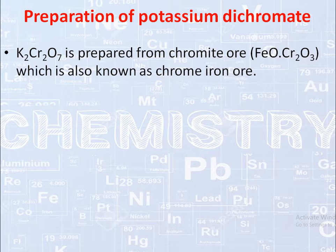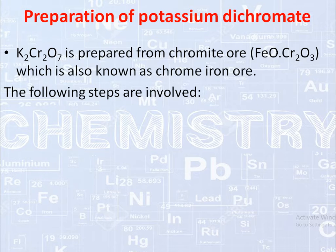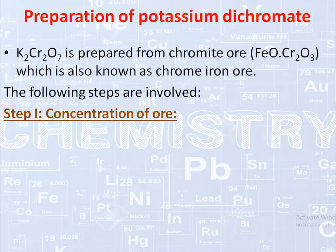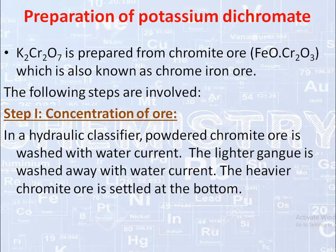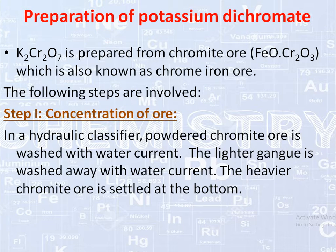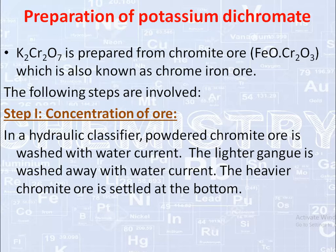The conversion of chromite ore into potassium dichromate involves four steps. Step 1 is the concentration of ore. In this step, chromite ore is concentrated using a current of water in a hydraulic classifier — a machine in which powdered chromite ore is washed with a water current. The lighter gangue is washed away, while the heavier, useful chromite ore is settled and concentrated at the bottom.